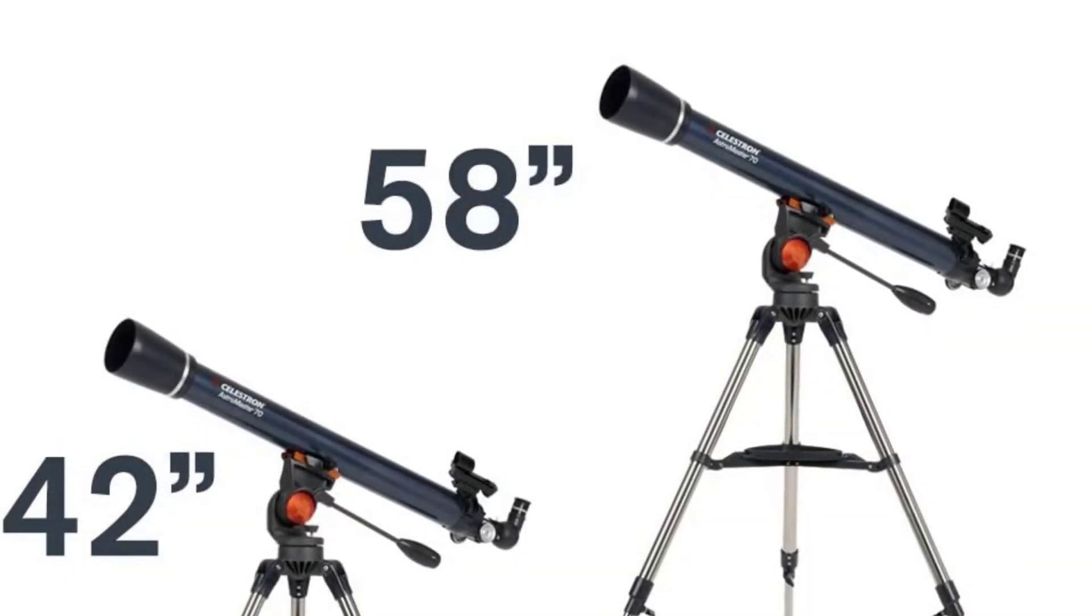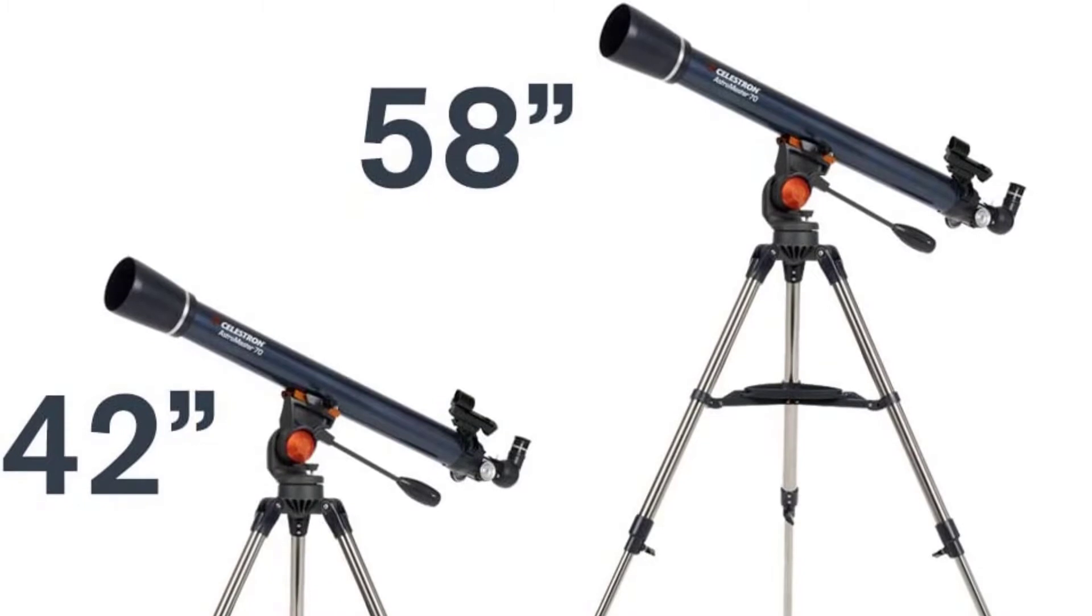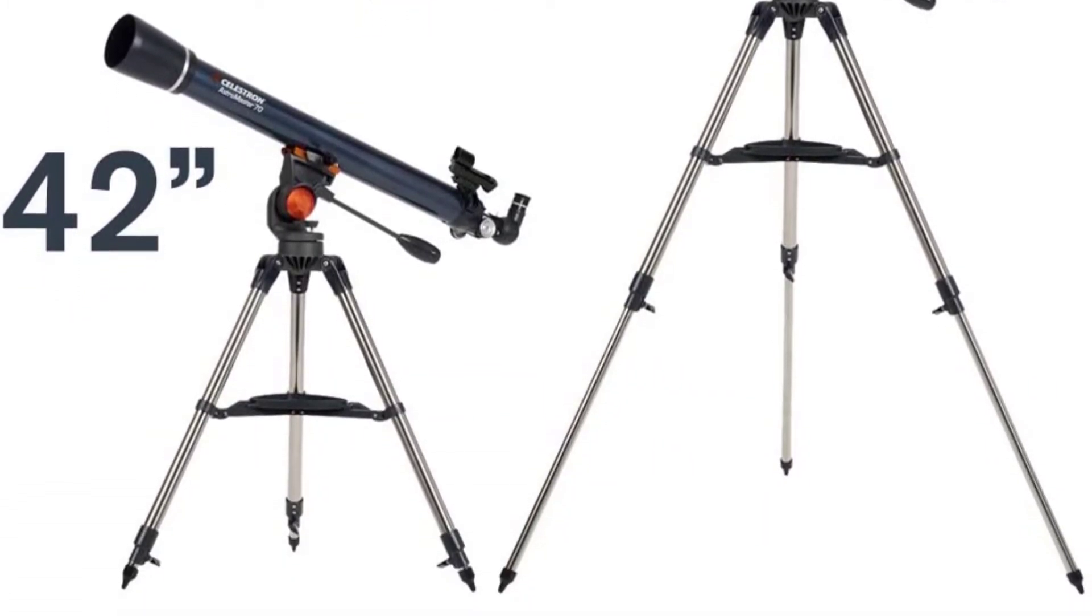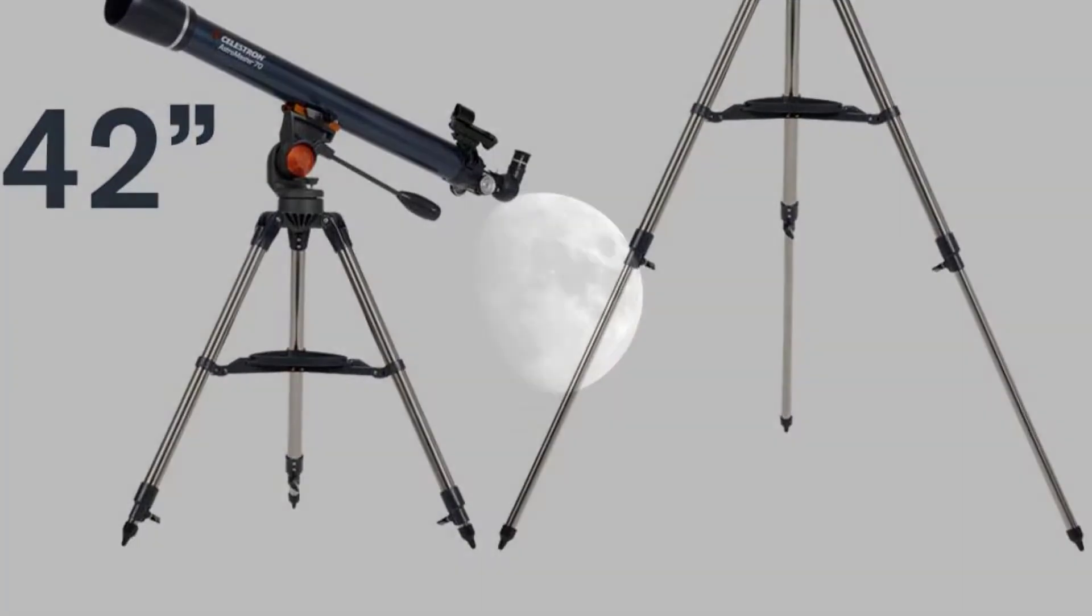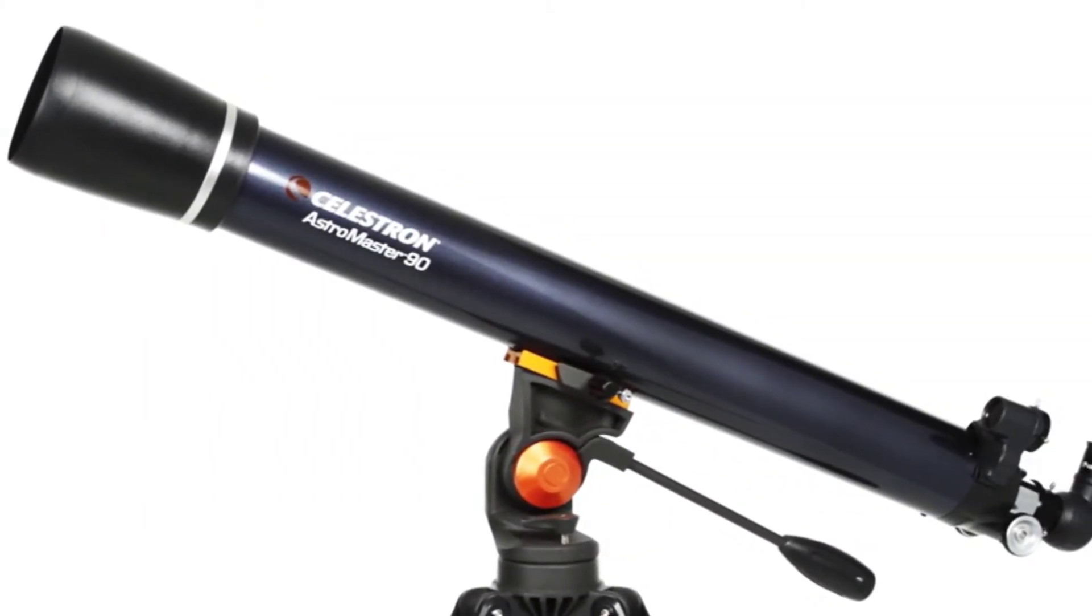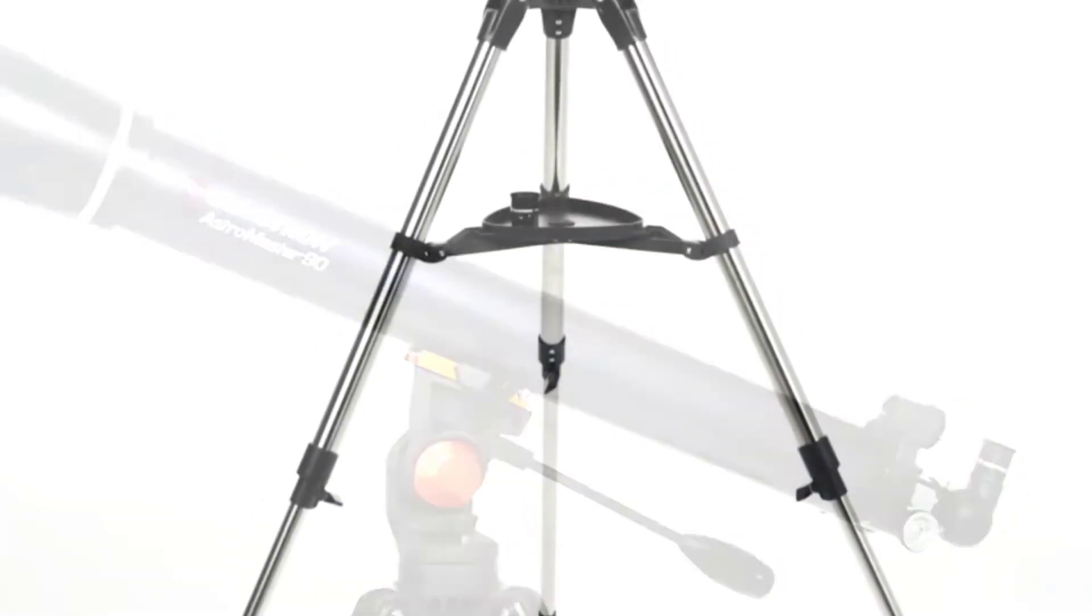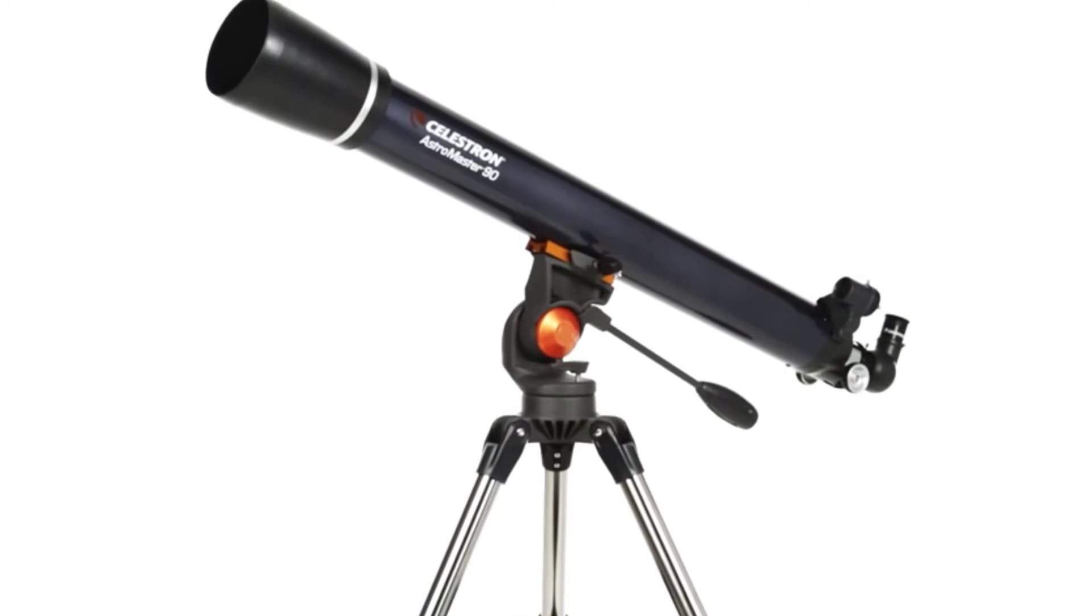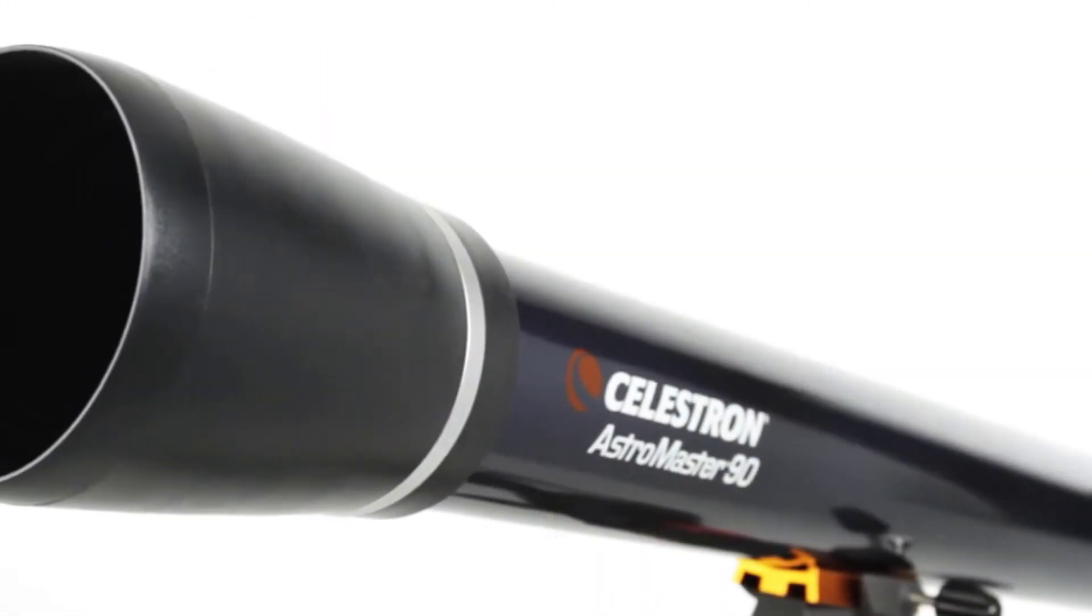It also comes with a bonus Starry Night Basic Edition astronomy software for interactive sky simulation. It includes two eyepieces, 20mm and 10mm, with an erect image star diagonal also includes a red dot finderscope and travel tripod, fully coated 70mm glass optics objective lens with erect image optics for easy daytime and night-time viewing.